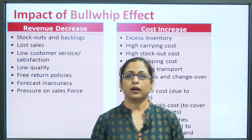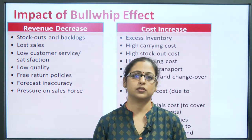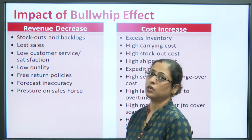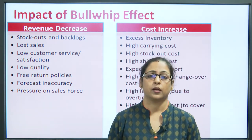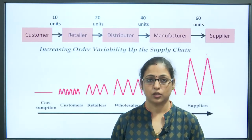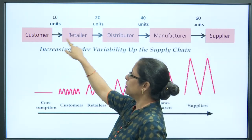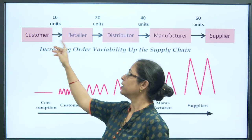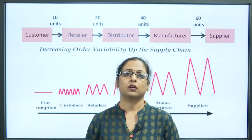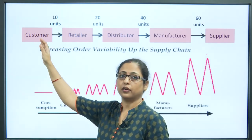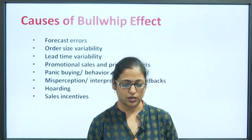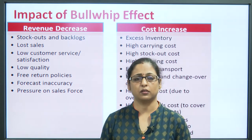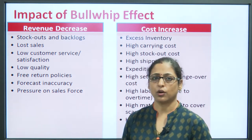Now let us understand the impact of bullwhip effect. There are majorly two effects: revenue decrease and cost increase. The revenue decrease effects include stock-out and backlogs — for example, if a customer demands 10 units and the retailer does not have sufficient stock, it may lead to stock-out, customer returns, and customer dissatisfaction. This is one reason why companies knowingly enter into bullwhip effect. Stock-out and backlog is therefore one key consequence.